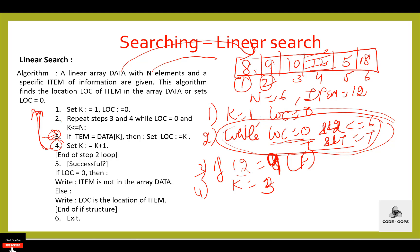Control transfers back to step 2: repeat steps 3 and 4 while loc equals 0 and k is less than or equal to n. loc equals 0 and k is 3, and 3 is less than or equal to 6, so the condition is true. Execute step 3: item is 12, and 12 equals data[k] — condition is false. Execute step 4: set k equal to k plus 1, k becomes 4.